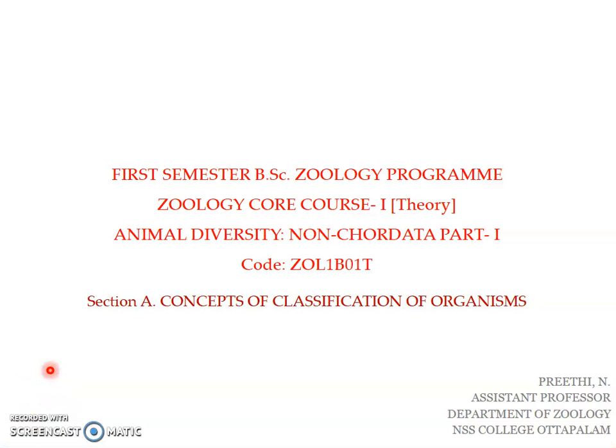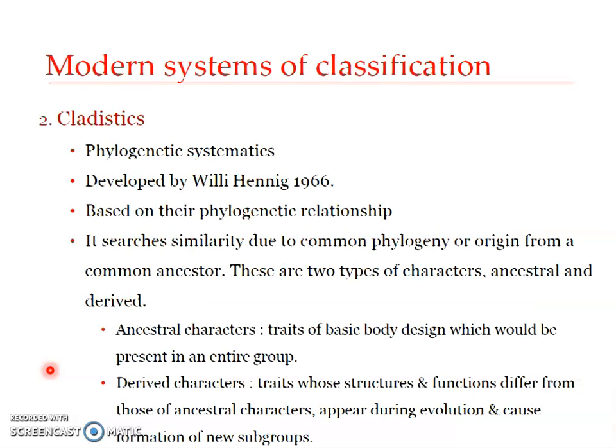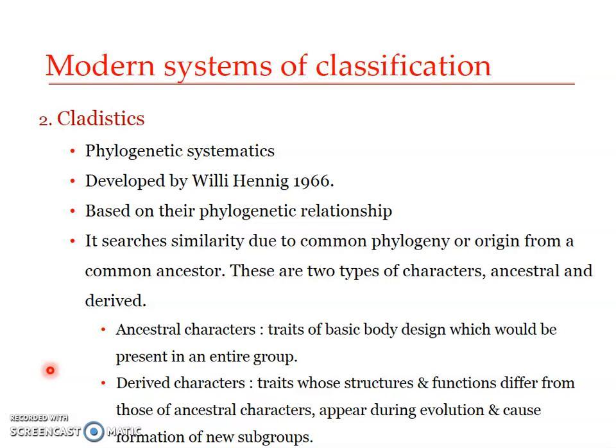Welcome back to the presentation on Concepts of Classification of Organisms for the first semester of the EPSC Zoology Program. Here we will be dealing with the second system and the model systems of classification, namely Cladistics. Cladistics is otherwise referred to as phylogenetic systematics or Cladistic Taxonomy. It was developed by Willi Hennig in 1966, and this classification is based on the phylogenetic relationship among organisms under study rather than on their observable morphological similarities.